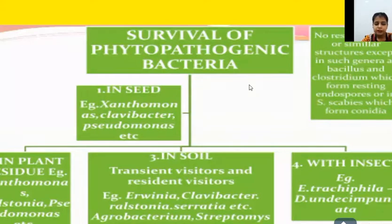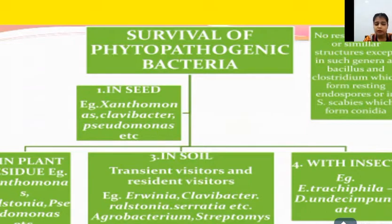Examples of phytopathogenic bacteria survival: Xanthomonas survives in plant residue and in seed; in soil, examples include Erwinia, Clavibacter, and Agrobacterium; with insects, Acinetobacter trachephylla is an example; and in seed, Xanthomonas and Pseudomonas are found. These phytopathogenic bacteria can survive in seed, plant residue, soil, and insects.